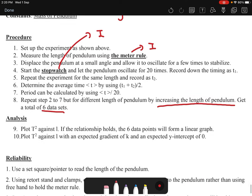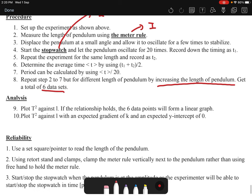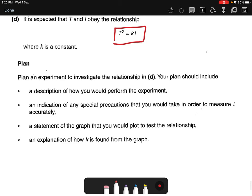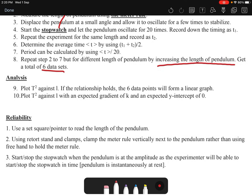Now we move on to the analysis part. Analysis is like plotting the graph because if you look at this, they ask us the third point - a statement of the graph you plot to test the relationship - and the fourth point asks us to find how do we find the k value. So this one we must include inside our planning under the analysis part. So for analysis, I will say I'll plot T² against l, and if the relationship holds, the six data points will form a linear graph.